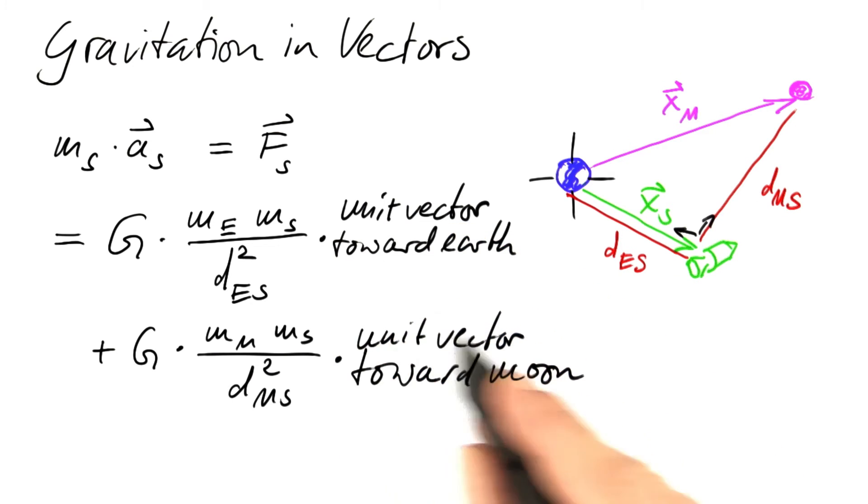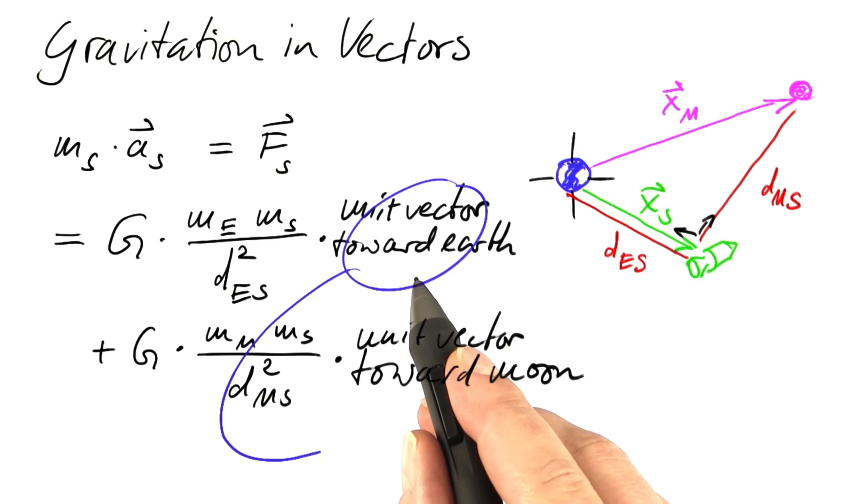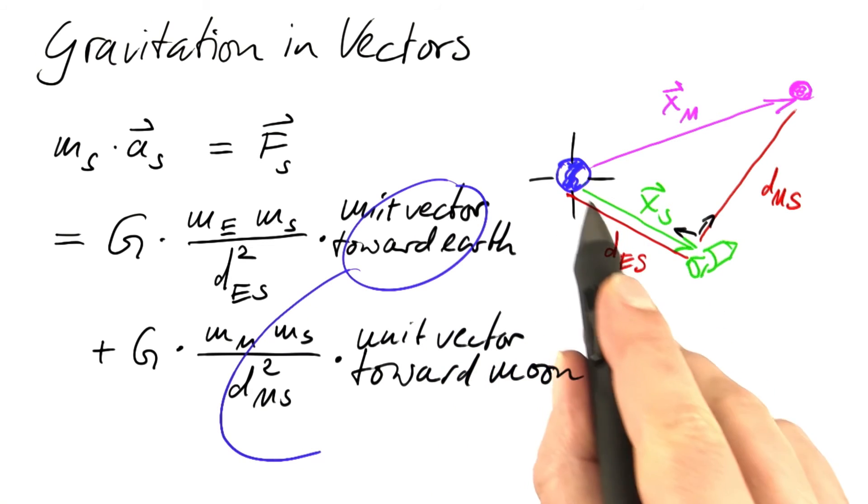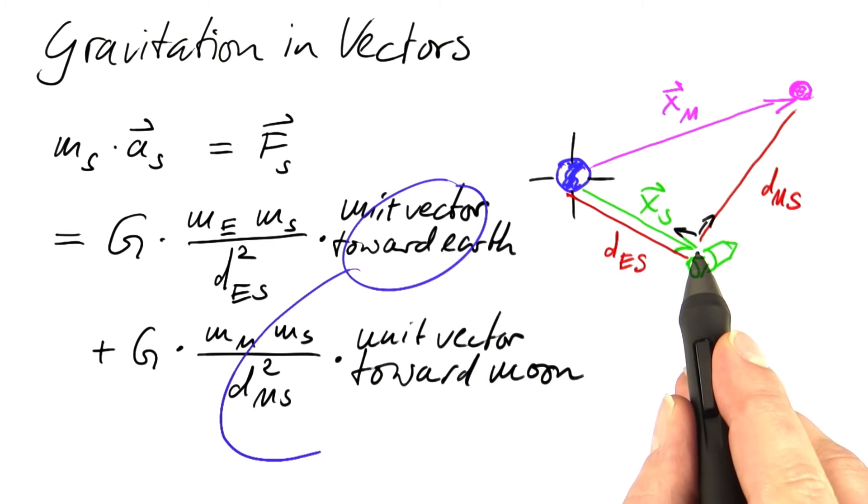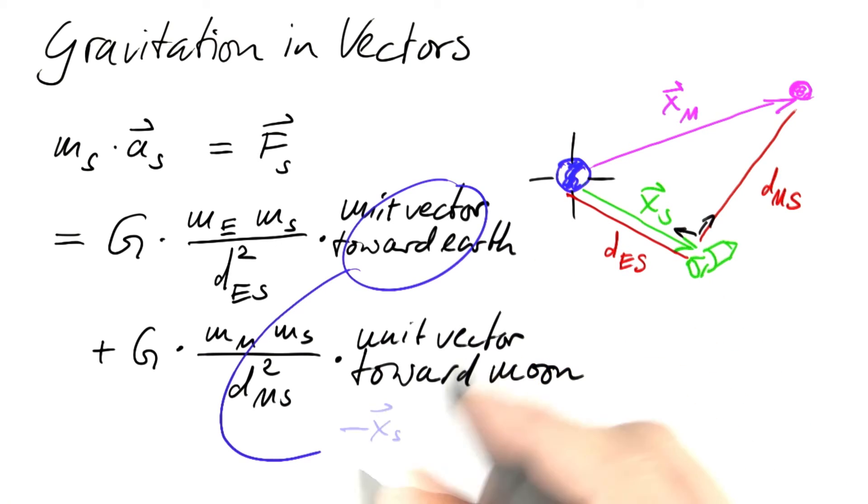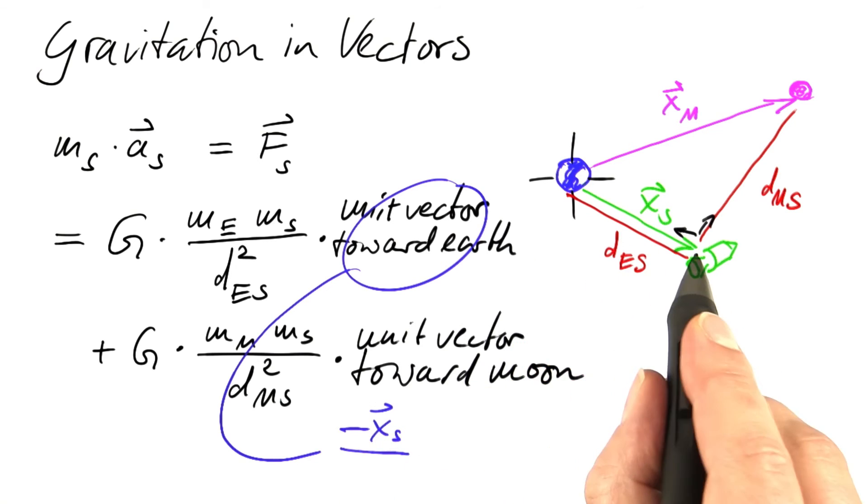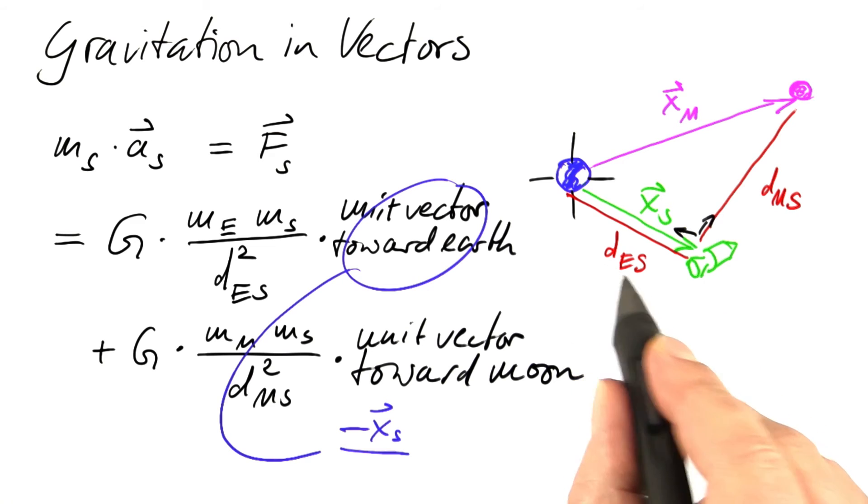So, how do we get these two vectors? For the first one, we can take minus xs, that's a vector that takes us from the spacecraft to earth, and divide by the length of xs, which is nothing but des.